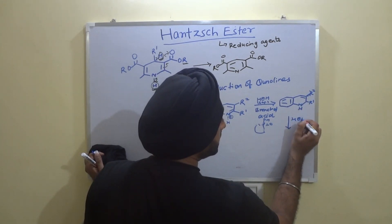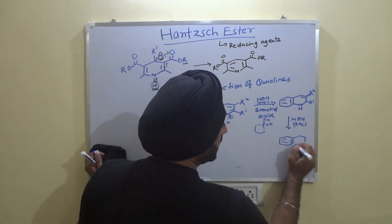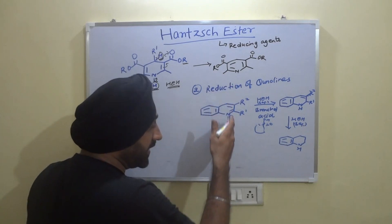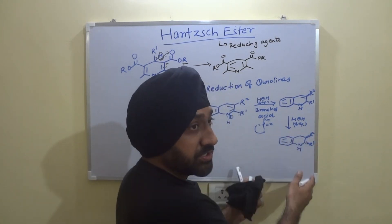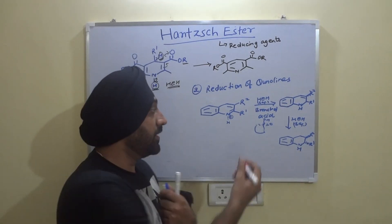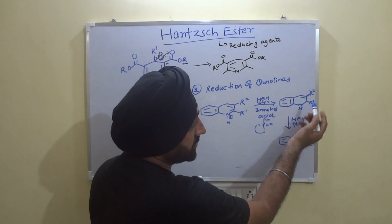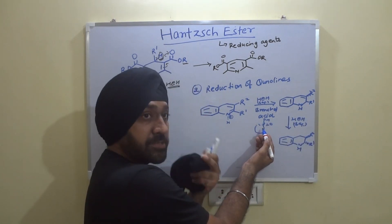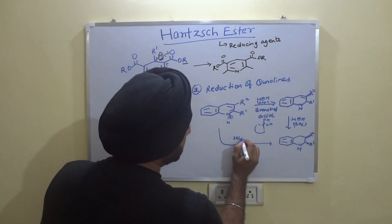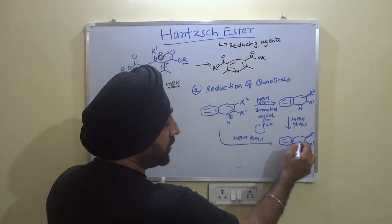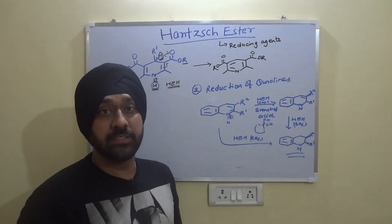If we use one more equivalent of Hantzsch ester, the other double bond on the pyridine ring of the quinoline is also reduced. The product has an anti-relationship. If we had used two equivalents of Hantzsch ester in one go, we would directly obtain this fully reduced product.